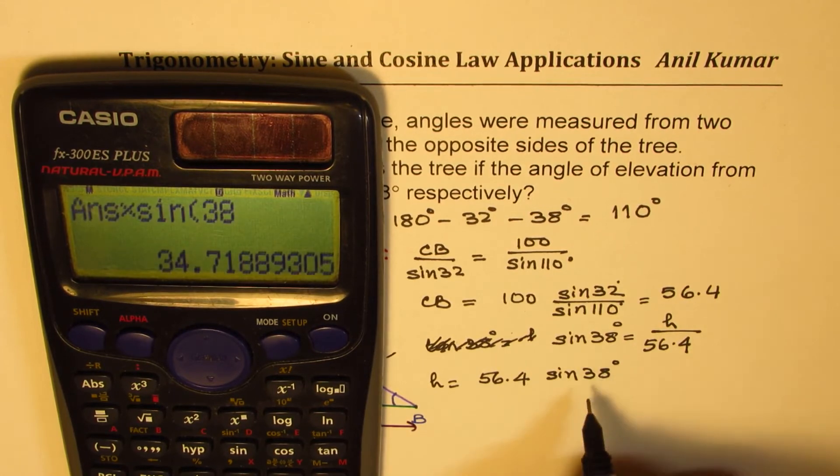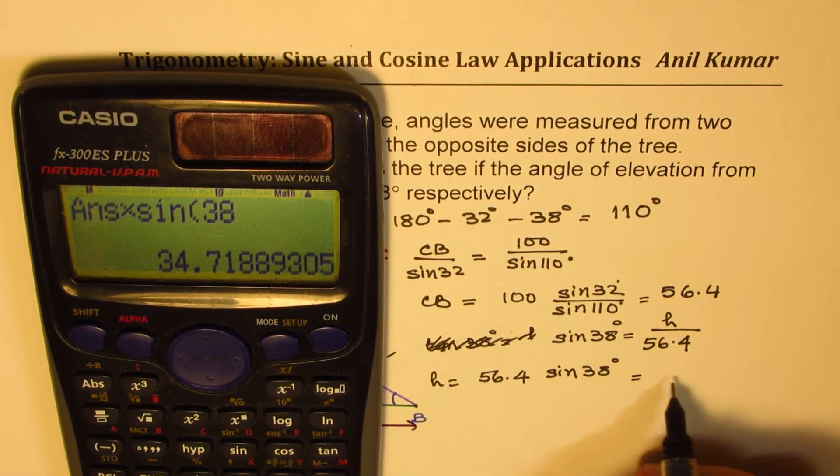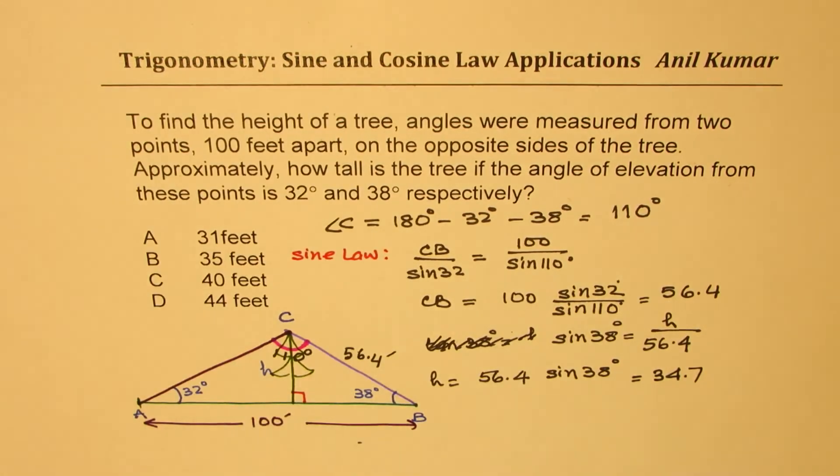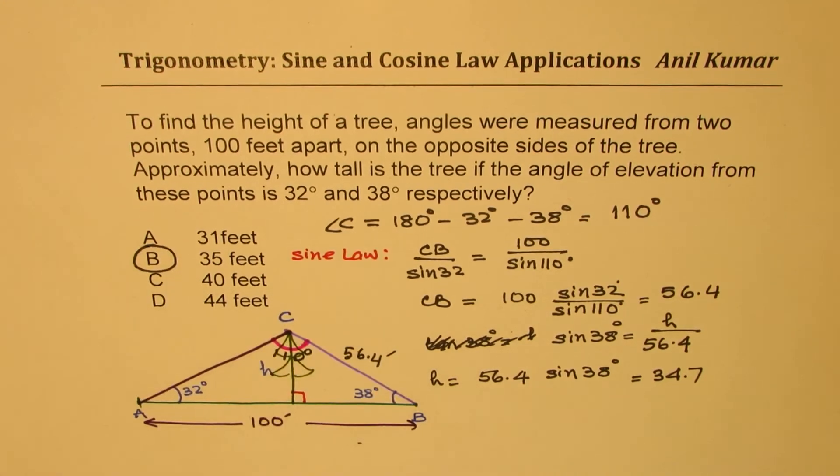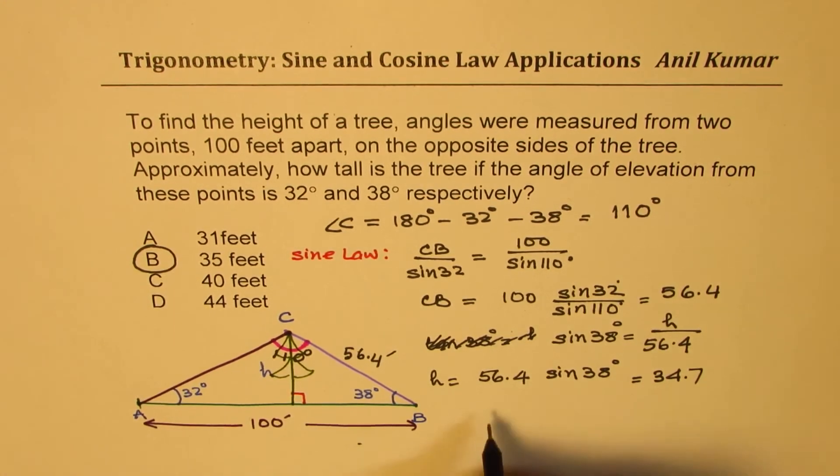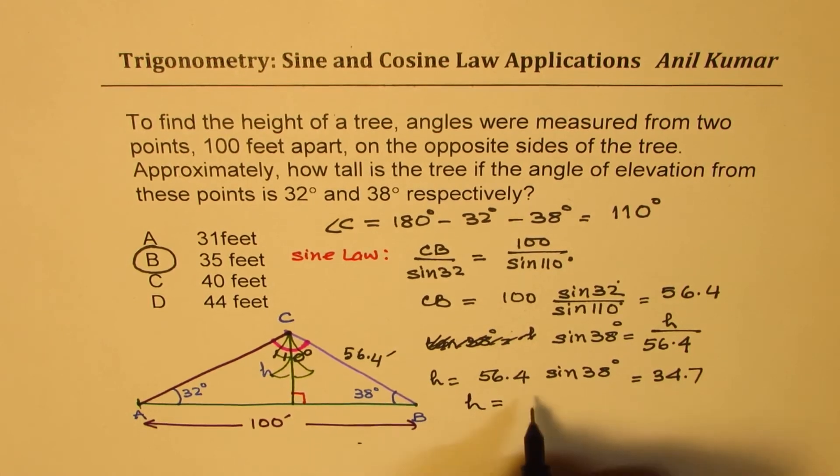What we get here is 34.7, so approximately the answer is 35 feet. So B is the right option. That is how we can get the height of a tree, which in this case is approximated to 35 feet.